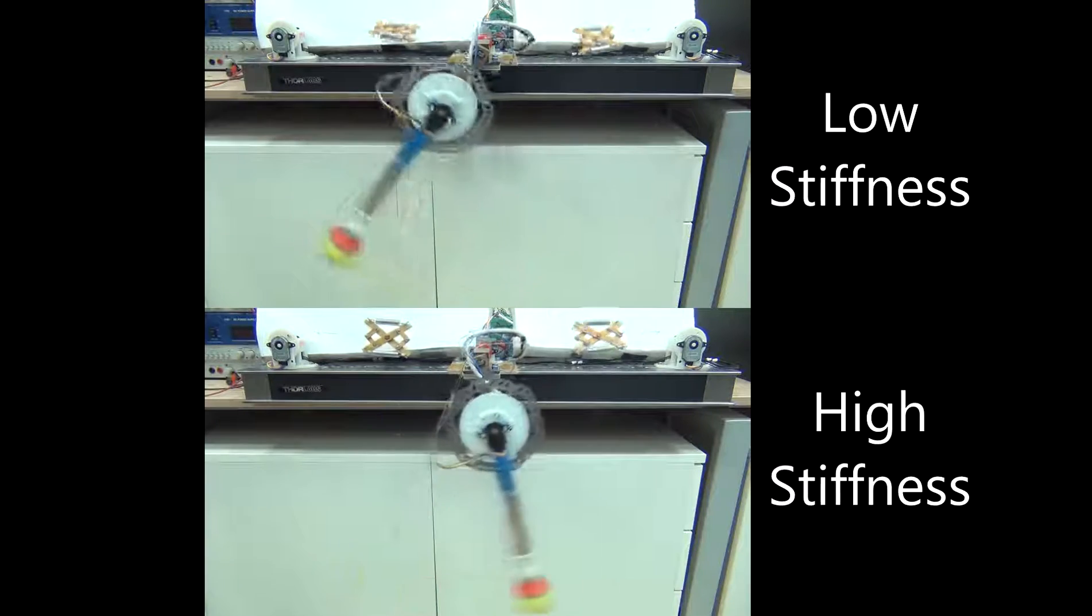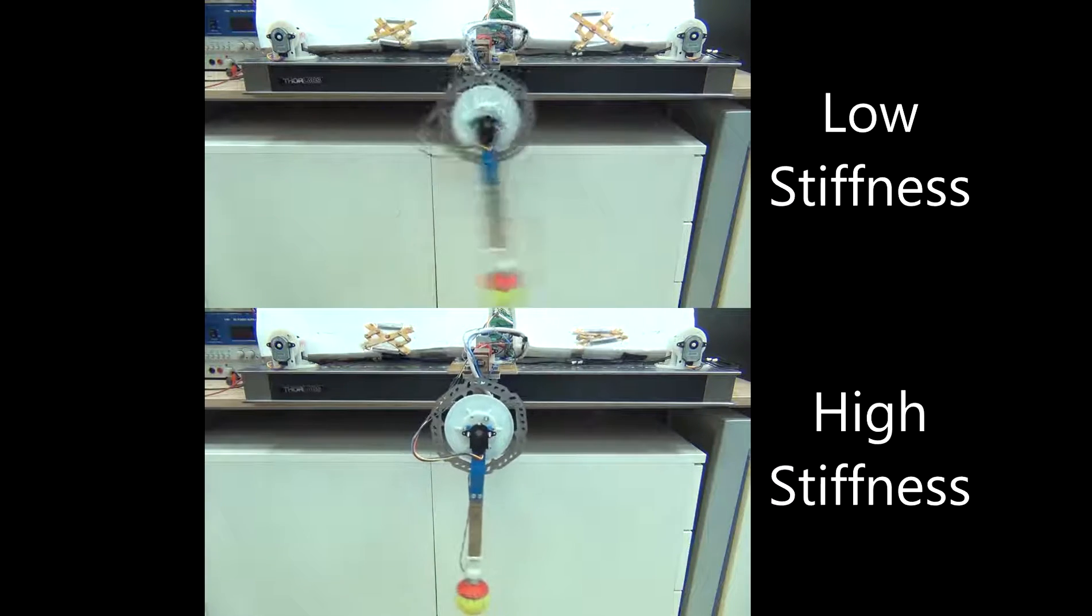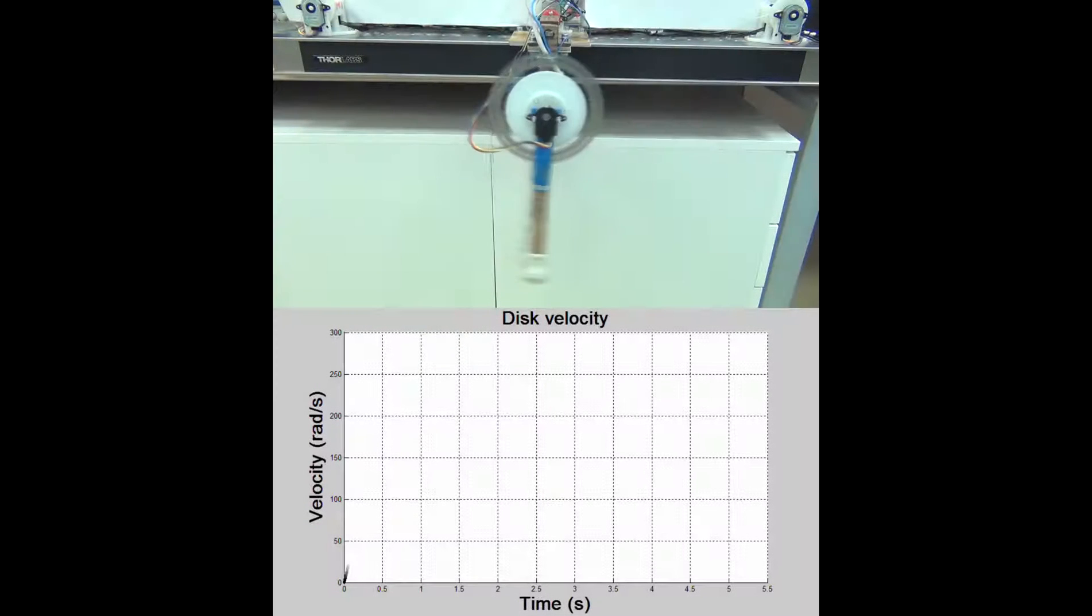The passively compliant elements in the system can store elastic potential energy and change the joint compliance on the fly. The reaction wheel can generate and apply torque on the system.